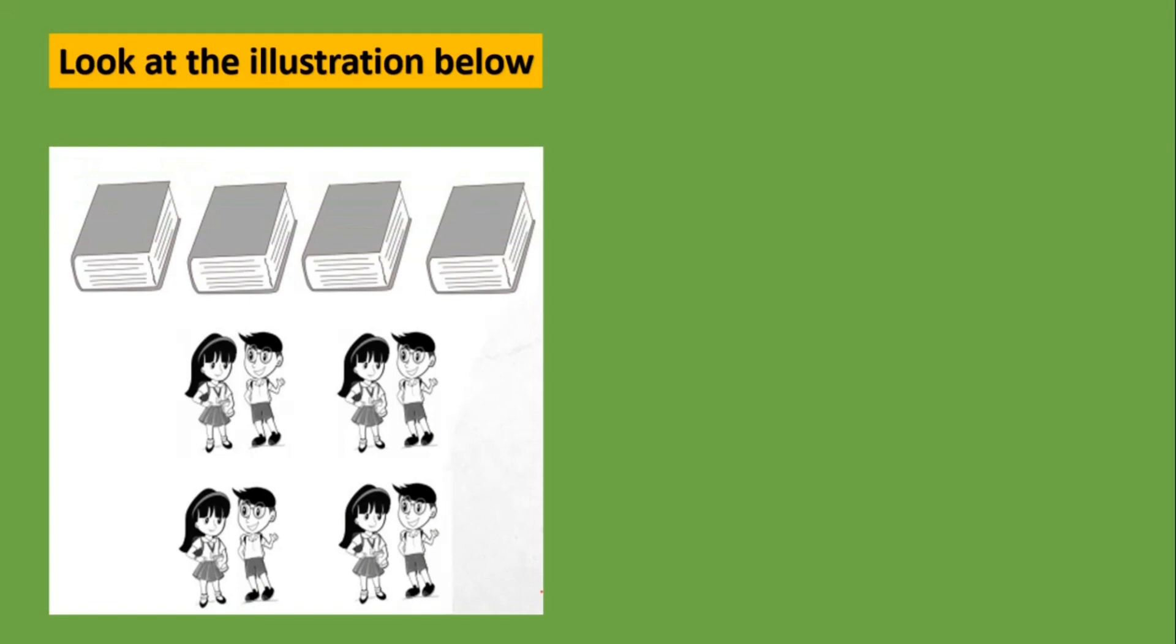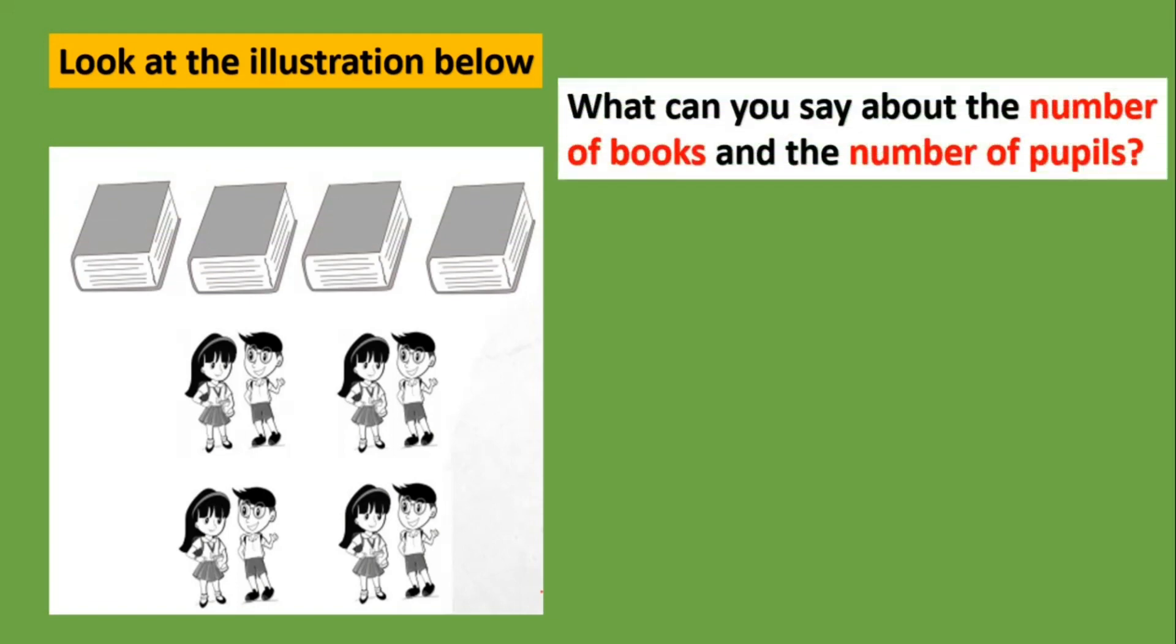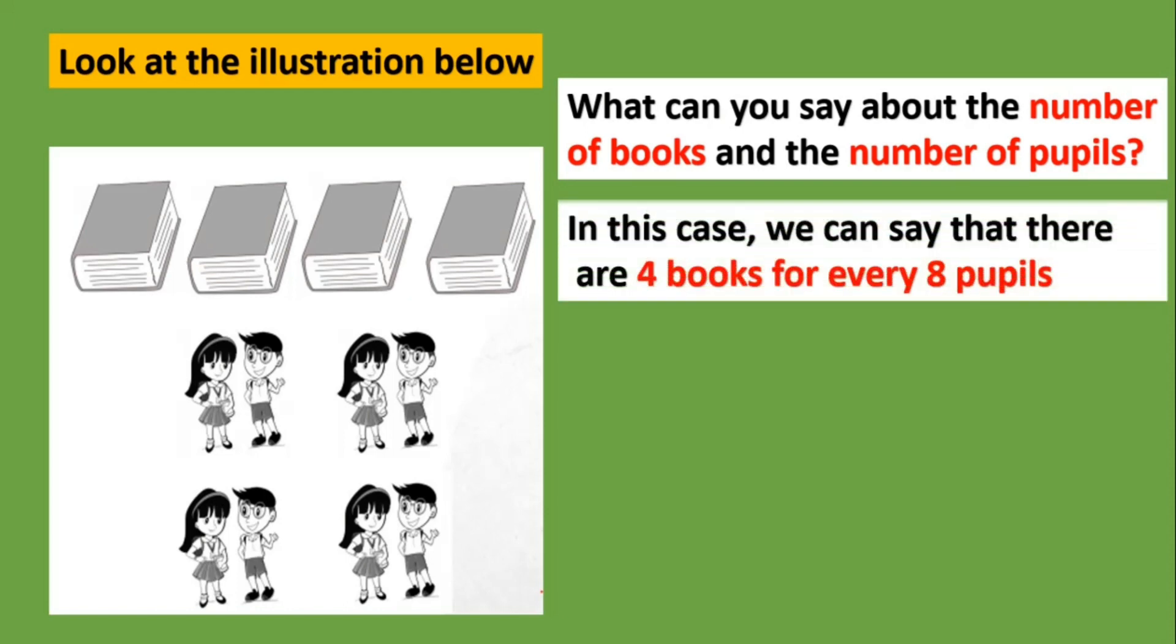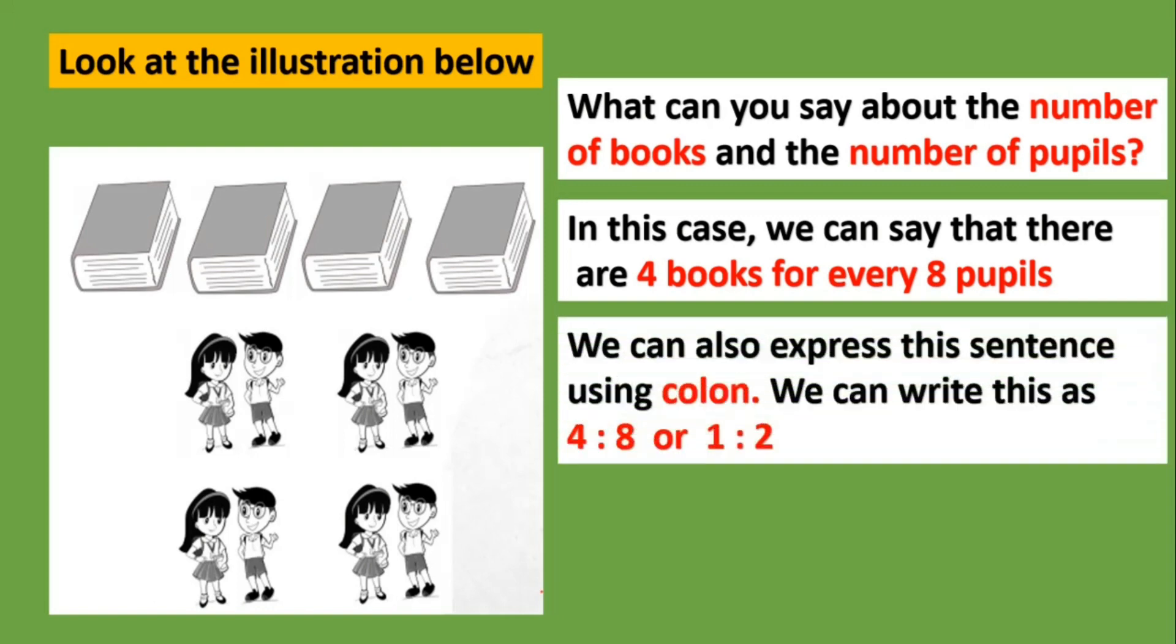Look at the illustration below. What can you say about the number of books and the number of pupils? In this case, we can say that there are four books for every eight pupils. We can also express this sentence using colon. We can write this as 4:8 or 1:2.